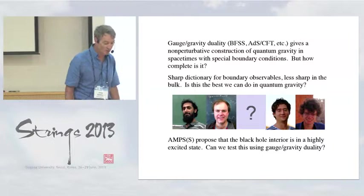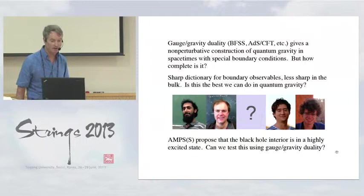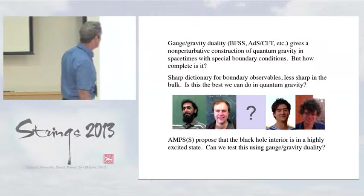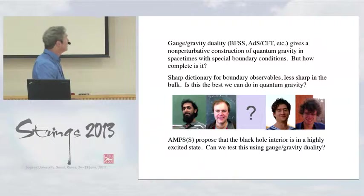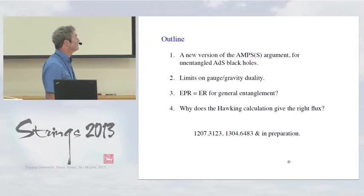So, now we have a sharp question. This shady group with the questionable acronym of AMPS, or maybe AMPS, have proposed that the black hole interior is in a highly excited state, and so can we test this by using gauge-gravity duality.